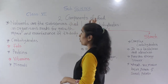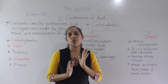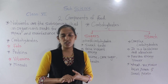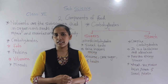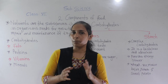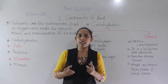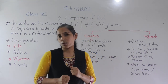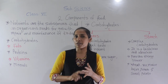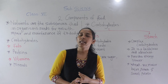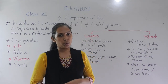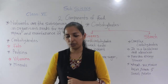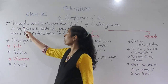Components of food — there are basically two important components: nutrients and roughage. Along with nutrients and roughage, there is one more component we require, and that is water. Our body requires all these different things in different amounts. So the three main components of food are nutrients, roughage, and water.